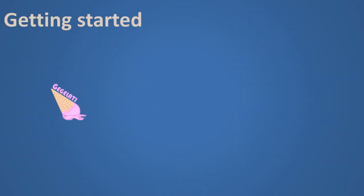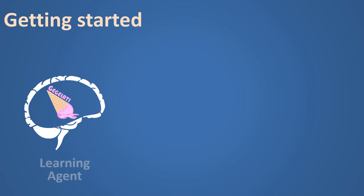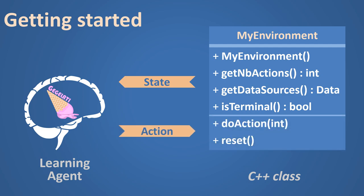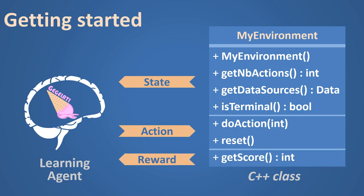To start training GEGELATI in your own learning environment, all you need is to create a C++ class with seven basic methods: three methods to create your environment and give its state to the learning agent, two methods to allow the learning agent to control the environment, and one last method to give rewards to the learning agent. And that's all.